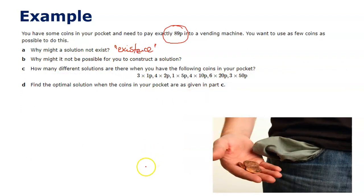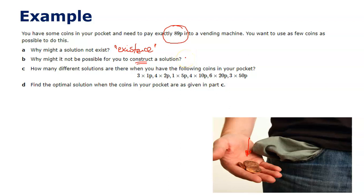Part b asks: why might it not be possible to construct a solution? Even if a solution exists — meaning you do have the right coins — you might not know what's in your pocket. Construction assumes a solution exists, but just because the money is there doesn't mean you know it's there. Once you look in your pocket, the problem changes — but until then, you can't construct the solution.